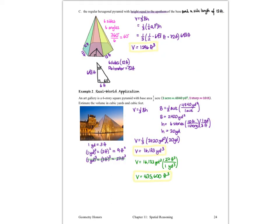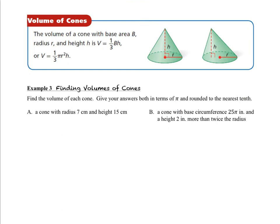We've done great work with the pyramids. Now let's look at cones. The volume of a cone is also one-third uppercase B times height, where the base is circular. So we use V equals one-third pi r squared times h. Remember, it starts with one-third uppercase B, which is the base area, times the perpendicular height. Let's take a look at example three.